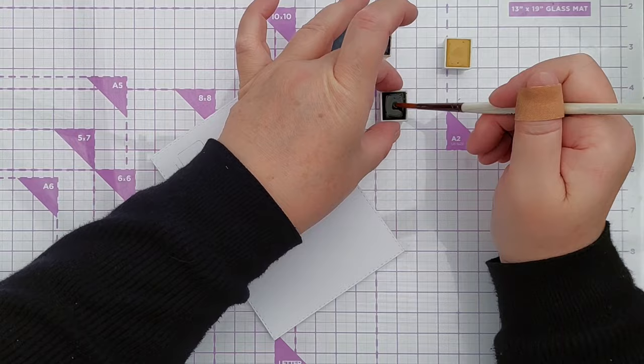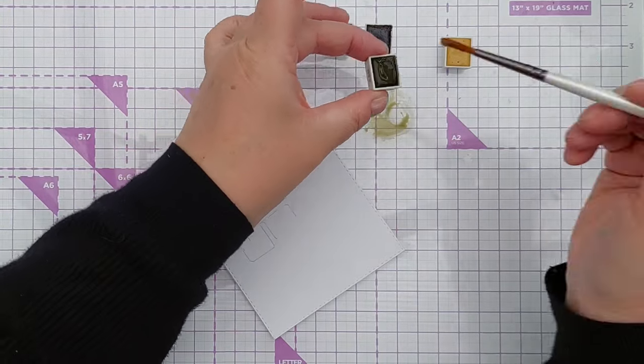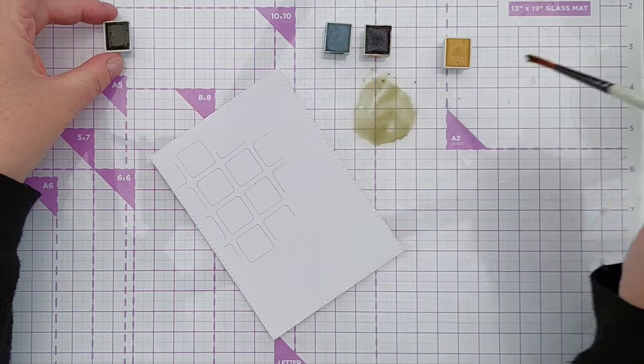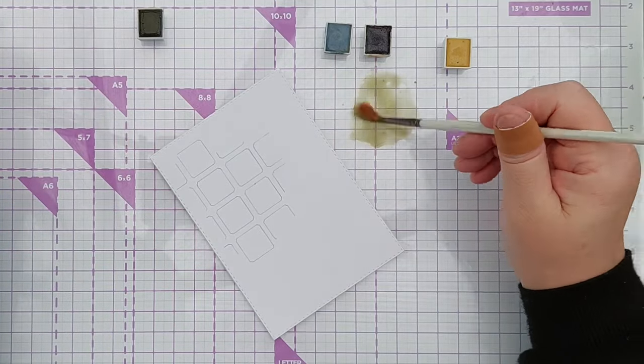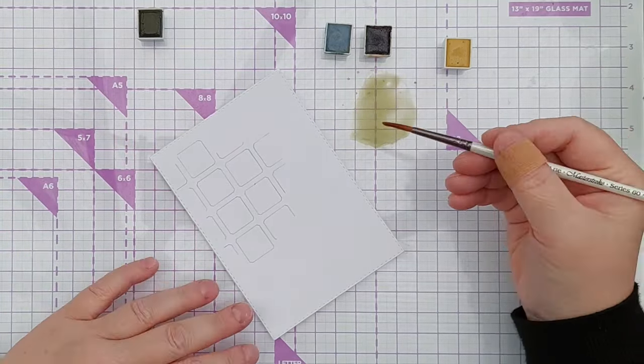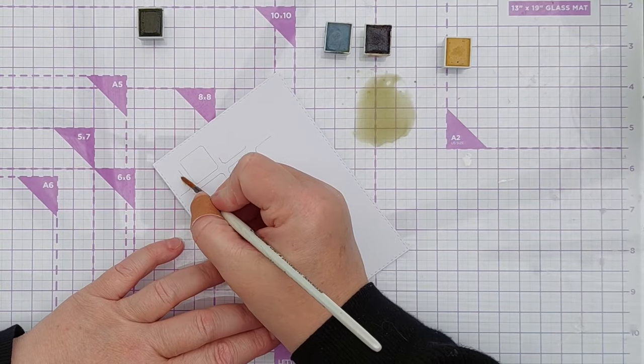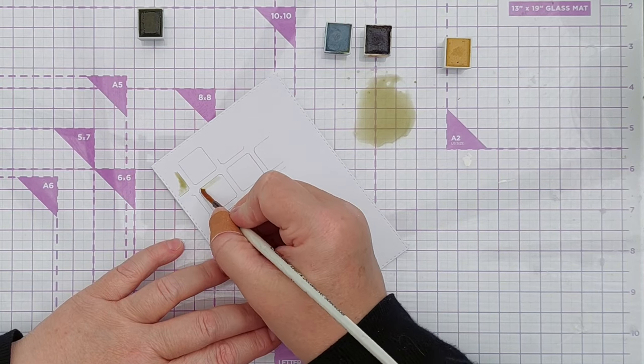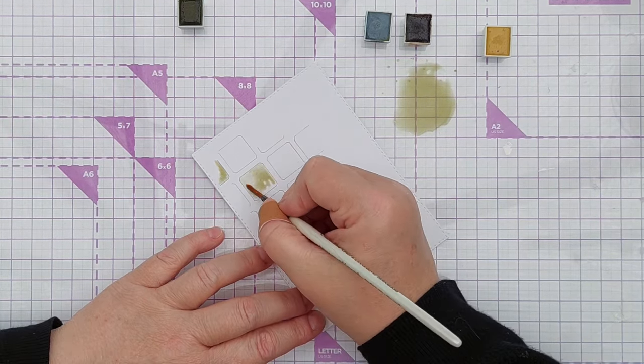I'm going to start with the olive green, add a bit of water, pick up some color, pop it on my mat and add water until I get the consistency of paint I want.